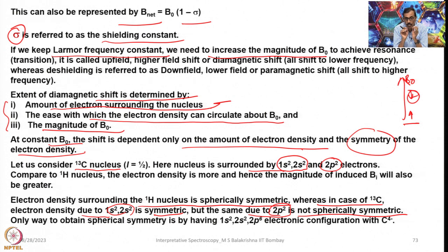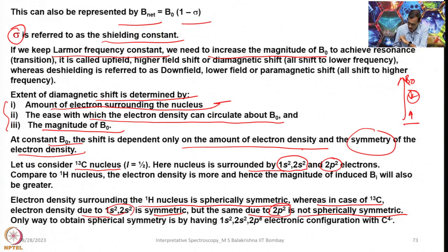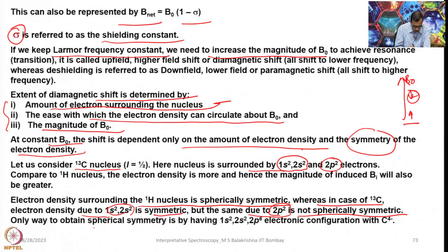In the case of 1H, there is 1 electron in the 1s orbital, which is spherically symmetric, so the electron density is spherically symmetric. In the case of 13C, electron density due to 1s² and 2s² is spherically symmetric, whereas that of 2p² is not spherically symmetric. The only way to obtain spherical symmetry is by having 1s² 2s² 2p⁶.